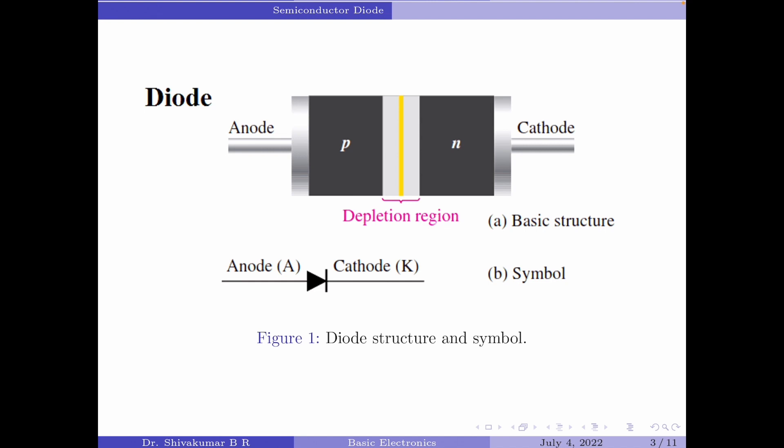The terminal towards the p-type material is called the anode and the terminal towards the n-type material is called the cathode. Since a semiconductor diode is created by simply joining an n-type semiconductor material with a p-type semiconductor material, let us now understand what happens when the n-type semiconductor is joined to a p-type semiconductor.